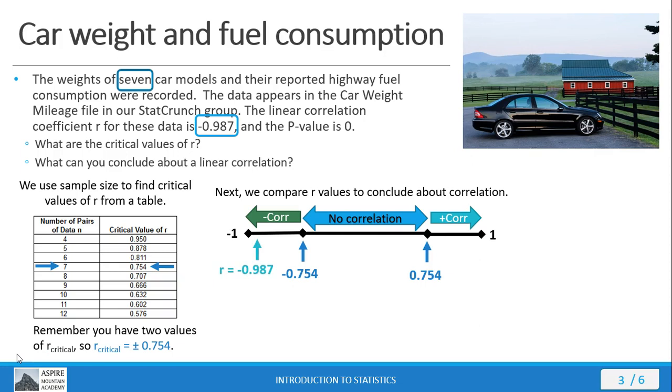Now what region are we in? Well, we're in the region of negative correlation, which is the region of acceptance on the negative side. Therefore we can conclude there is sufficient evidence to support a claim of linear correlation between car weight and highway fuel consumption.